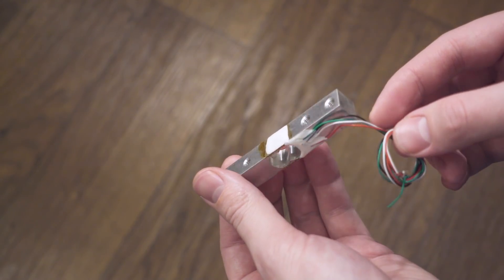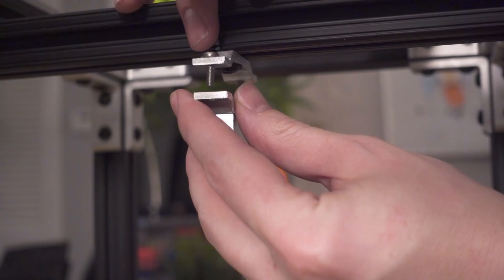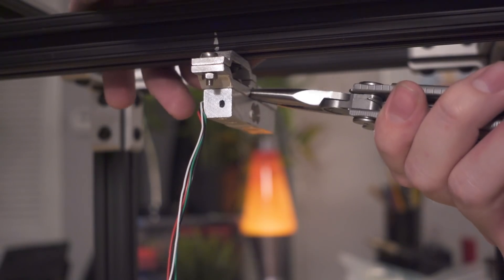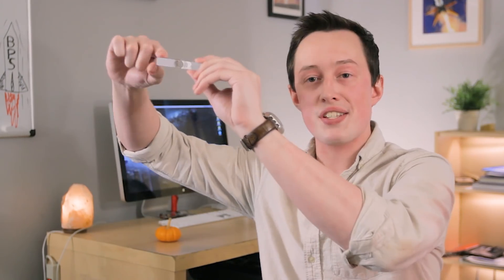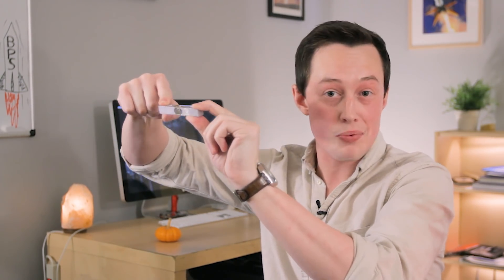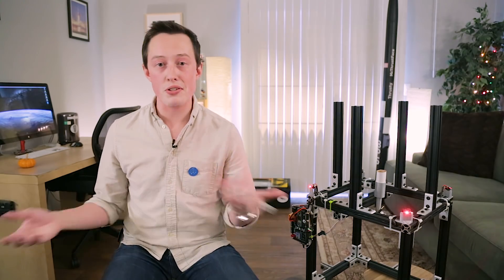This is the load cell we'll be using. We'll attach it to the test stand using the brackets we just made and once mounted it'll work the same way as that ruler. Even though it's almost impossible to see from this camera angle when I push down on this side of the metal load cell the top half gets pulled apart just like the ruler and the bottom half gets scrunched together.